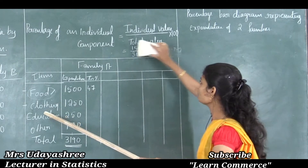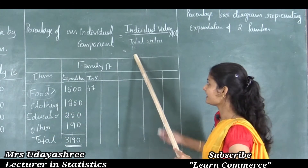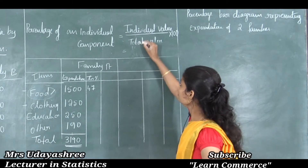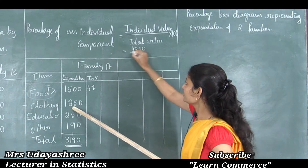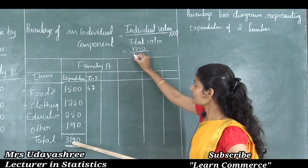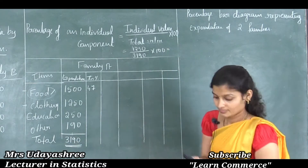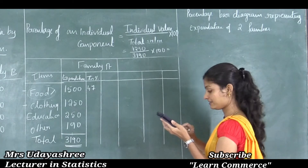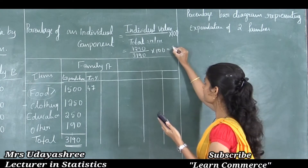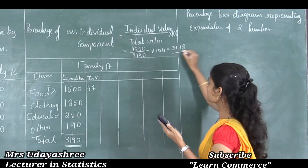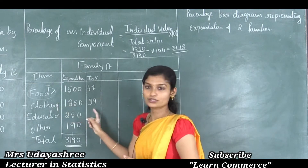For the next individual component, clothing, the individual value is 1250. So percentage = 1250 ÷ 3190 × 100 = 39.18, which is approximately 39%. Therefore in front of clothing I will write 39.